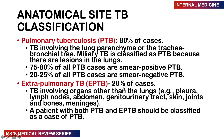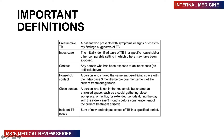Those with smear-negative results generally do not transmit the infection. Extra-pulmonary TB accounts for 20% of cases. If a patient presents with both pulmonary and extra-pulmonary TB, we classify it as pulmonary TB. TB can affect the lungs, pleura, lymph nodes, abdomen, genitourinary tract, skin, joints, bones, meninges, and even the eyes — it is truly a multi-systemic condition.